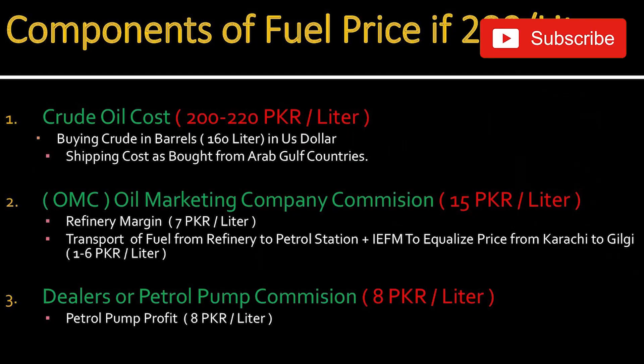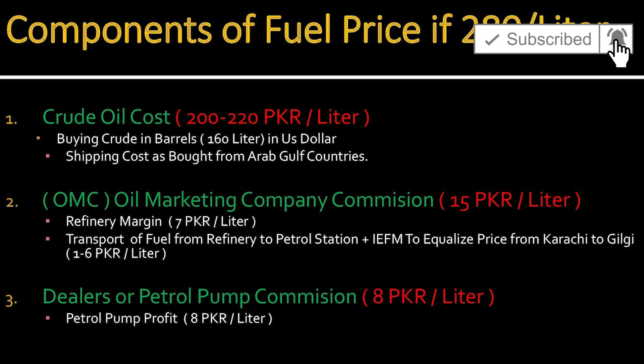پھر یہ petrol pump تک پہنچتا ہے، لیکن petrol pump تک پہنچتے تک اس میں government per liter 60 روپے petrol پر چارج کرتی ہے اور 50 روپے diesel پر چارج کرتی ہے۔ تو وہ crude oil کی price plus 60 روپے ہو گئے۔ پھر جو oil marketing companies ہیں جو refinery کرا کے بیچ رہی ہیں وہ بھی تقریباً 7 روپے per liter لیتی ہیں، تو 7 روپے یہ ہو گئے۔ پھر اس کے علاوہ petrol pump والے بھی 8 روپے per liter لیتے ہیں۔ تو 7 plus 8 = 15، اور 60 کے ساتھ ملا کے 75 روپے ہو گئے۔ پھر اس کے بعد ایک اور چیز ہوتی ہے جسے IFEM کہتے ہیں۔